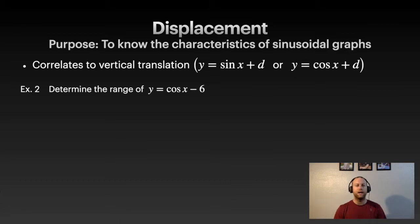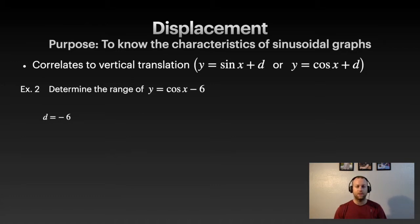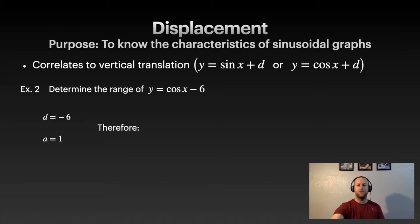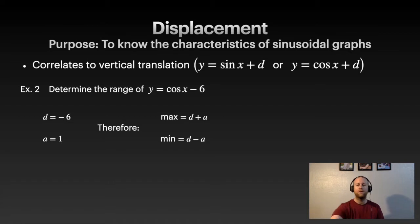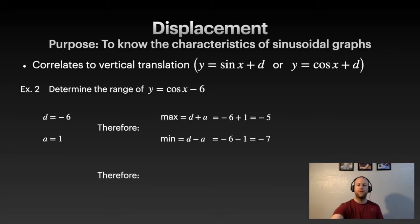Let's try another example — determining the range of cos(x) minus 6 without graphing. The d value is negative 6, amplitude is 1. Using d plus a for maximum and d minus a for minimum: the maximum value is negative 5 and the minimum is negative 7. That's how easy it is — you just need those equations.